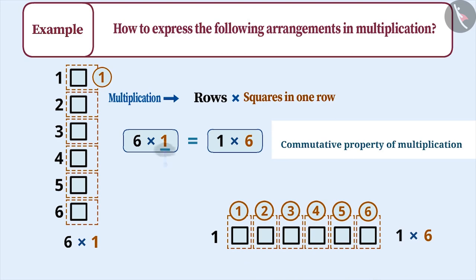Here, 1 is the multiplicative identity. So, whether we write 6 multiplied by 1 or 1 multiplied by 6, the result will be 6.